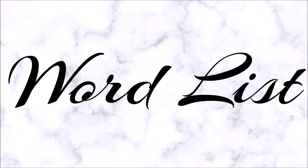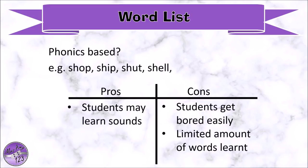Let's look at how I choose the word list for my own spelling program. In recent years many teachers have gone back to phonics-based word lists where all words share a sound — for example, shop, ship, shut, shell all have the SH sound. The pros are that students hopefully learn that sound. The cons are that these lists get boring very quickly, kids feel they know all the words because they follow a predictable pattern, and you're limited in how many words you can cover in a year. There's also the issue that some sounds get a bit ridiculous and kids just won't use those words very often, plus they miss out on words that don't fit conventional spelling patterns.